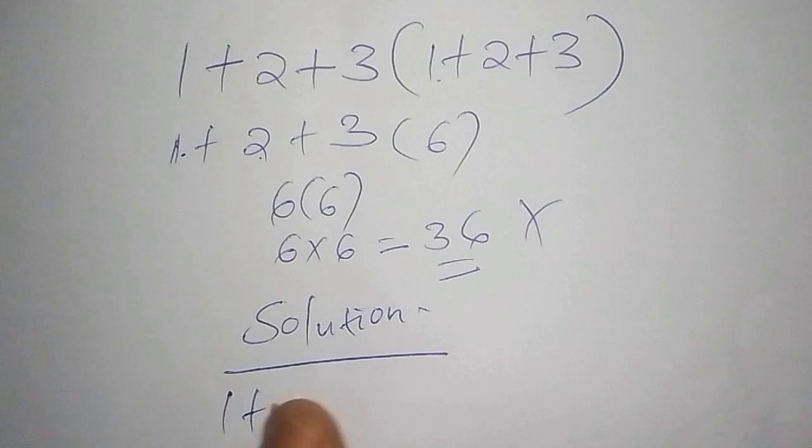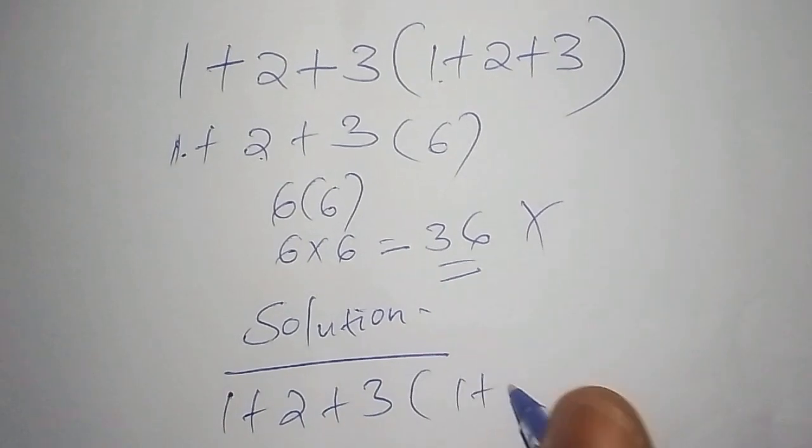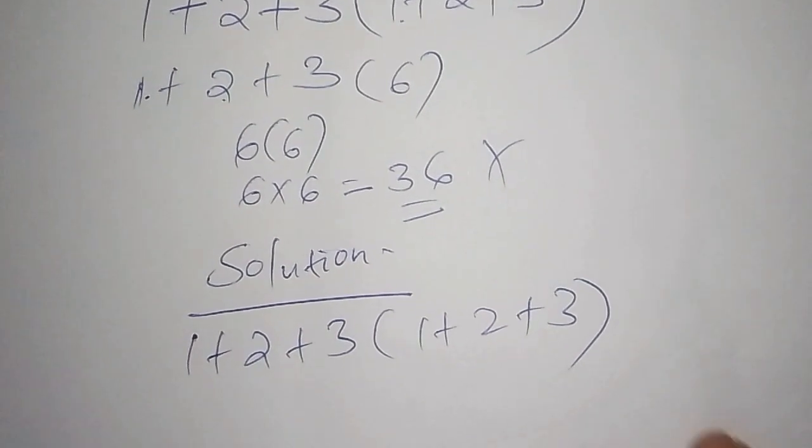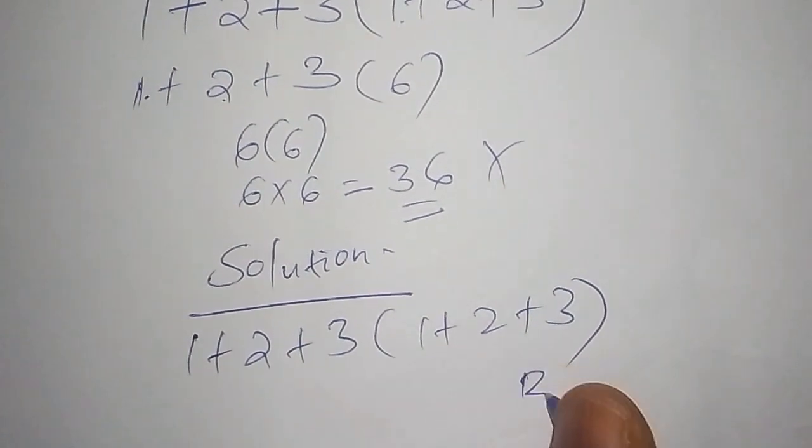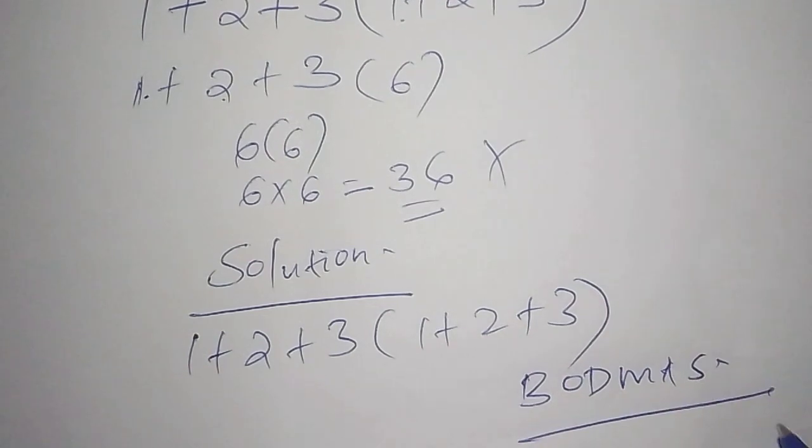So we have 1 + 2 + 3(1 + 2 + 3). Before I start working out this problem, I need to bring something here that is called BODMAS. Just as the way we begin, we work out the bracket first.